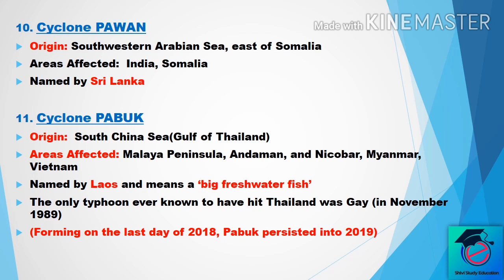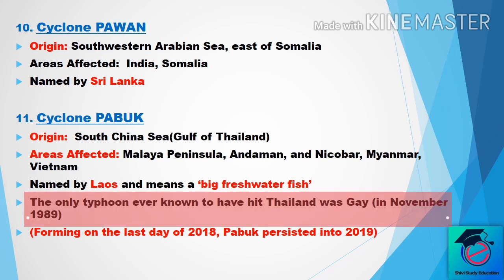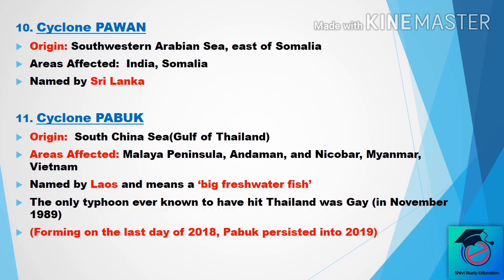The name Pabuk was given by Laos, which means 'big freshwater fish.' An important point here is that Pabuk is only the second typhoon ever known to have hit Thailand — the first was Gay in November 1989. Cyclone Pabuk formed on the last day of 2018, December 31st, and persisted into January 1st, 2019.